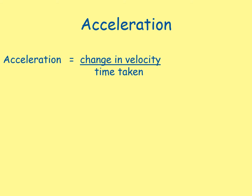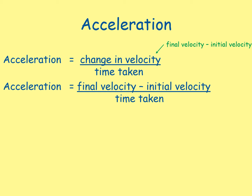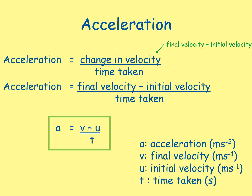Acceleration equals the change in velocity divided by time taken. We can rewrite the change in velocity as the final velocity minus the initial velocity. This lets the equation become: acceleration equals final velocity minus initial velocity divided by time taken. Using symbols, this is a = (v - u) / t, where a is acceleration in metres per second squared, v is the final velocity in metres per second, u is the initial velocity in metres per second, and t is the time taken in seconds.